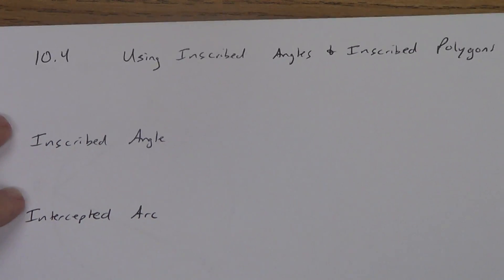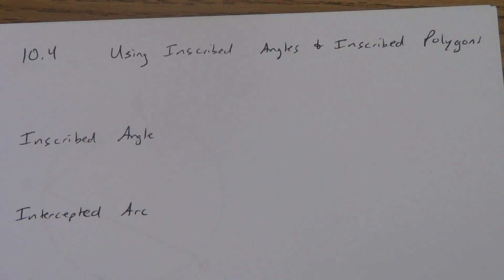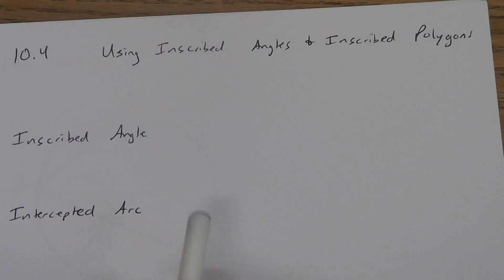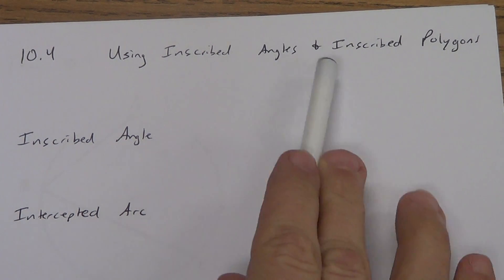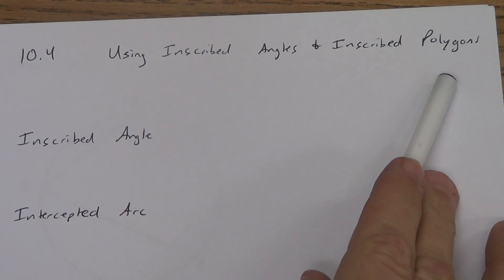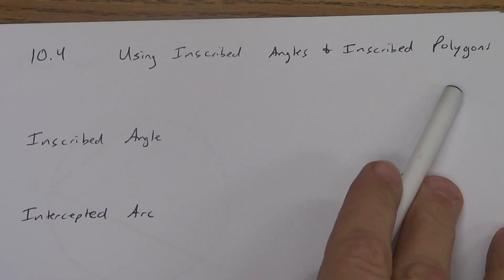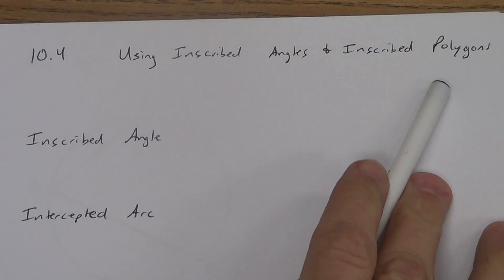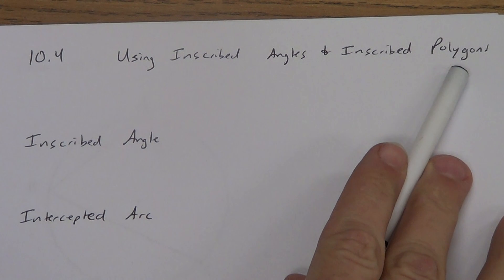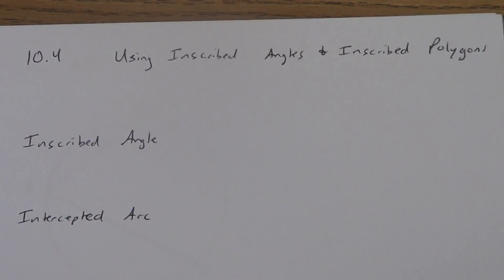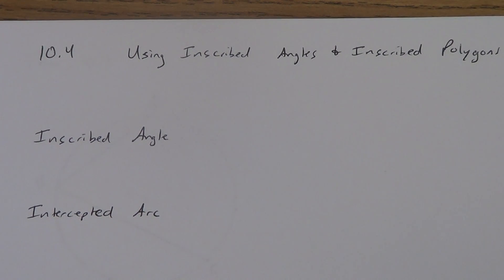Here we go on Lesson 10.4. Today we're going to be talking about inscribed angles and inscribed polygons, specifically triangles and quadrilaterals, but we can talk about any kind of inscribed polygon. Those are the ones we're going to be focusing on.